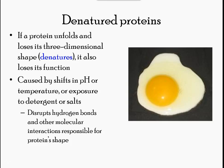If a protein is subject to a change in temperature, pH, or exposure to chemicals, the protein structure may change, losing its shape in what is called denaturation. Denaturation is often reversible because the primary structure is preserved; if the denaturing agent is removed, the protein can resume its function. Sometimes denaturation is irreversible, leading to a permanent loss of function.